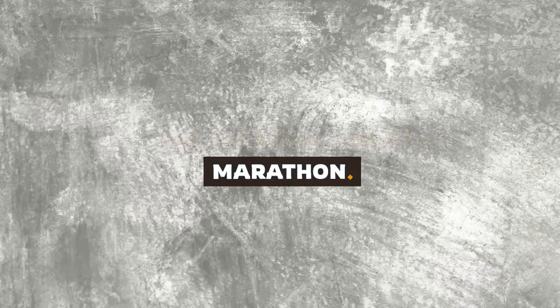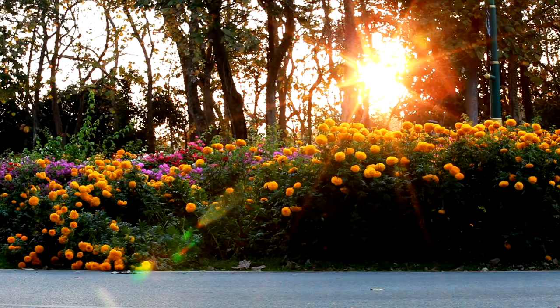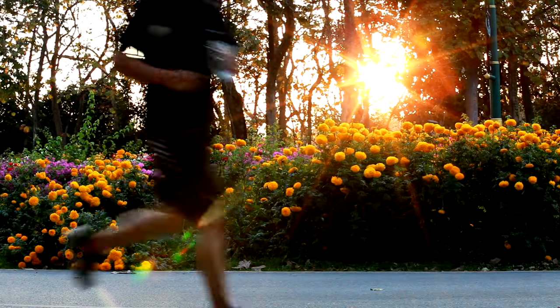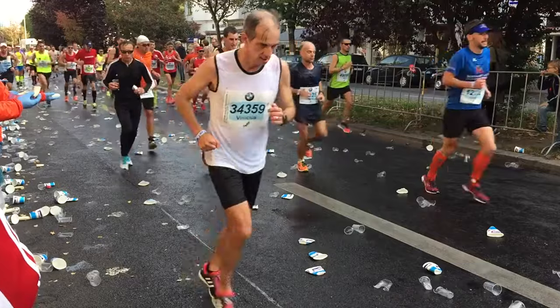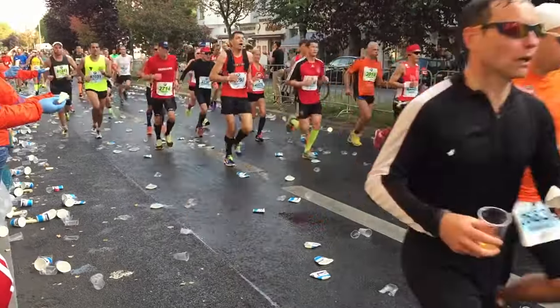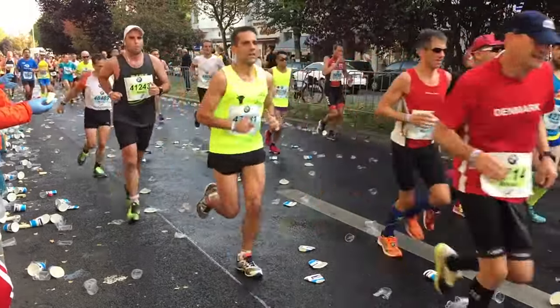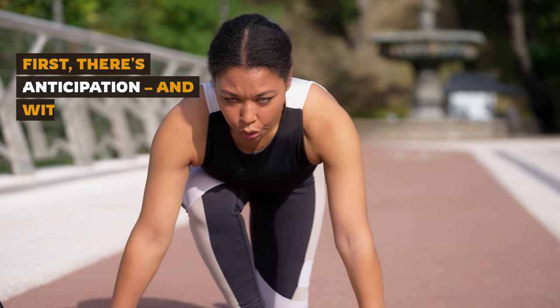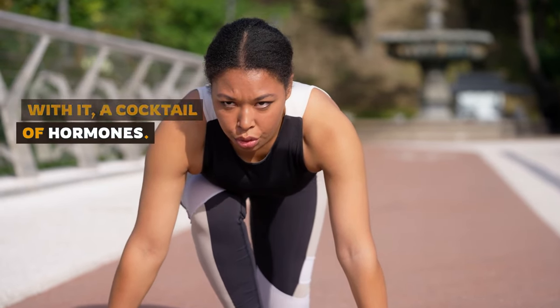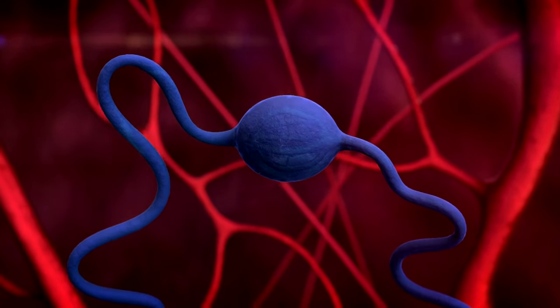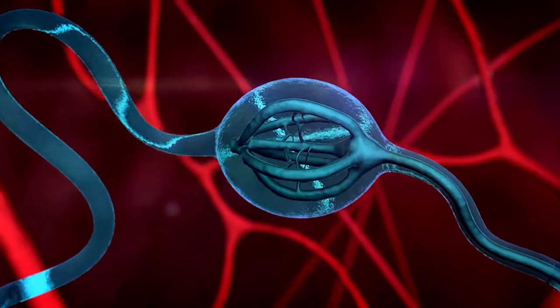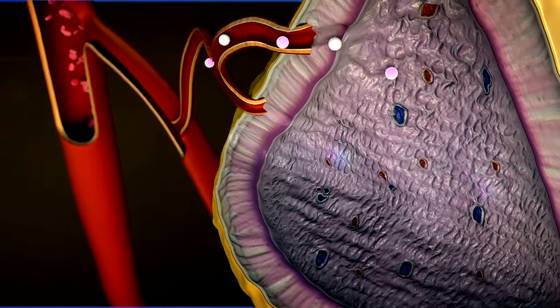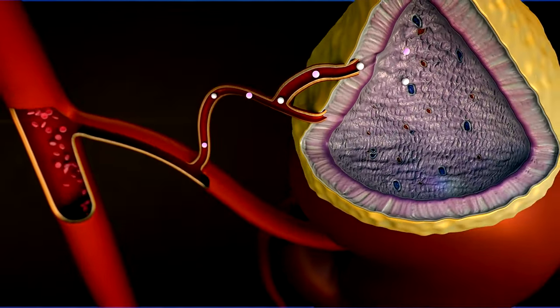The starting line of a marathon. Surrounded by a sea of runners, each heartbeat is a drumroll to the impending physical symphony. But what's really fascinating is what's happening inside your body at this very moment. First, there's anticipation, and with it a cocktail of hormones. Adrenaline or epinephrine surges. This isn't just a feeling, it's a powerful chemical reaction. Your adrenal glands, perched atop your kidneys, spring into action.